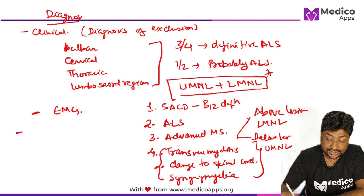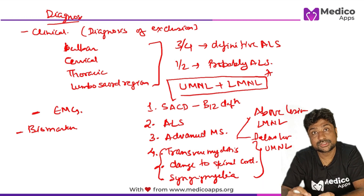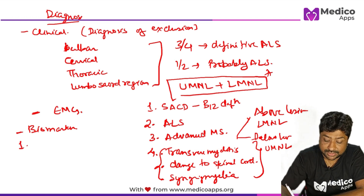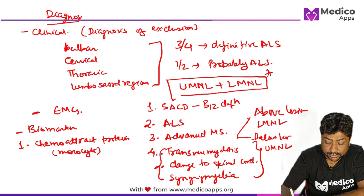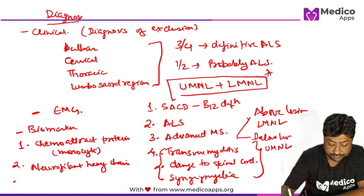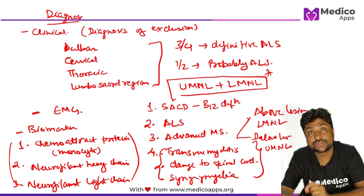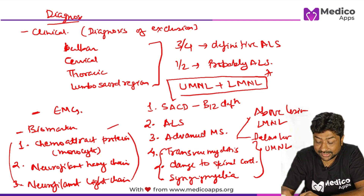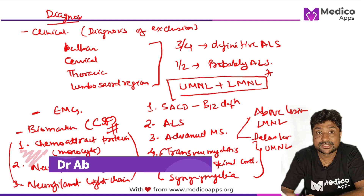There are important biomarkers which help us identify ALS earlier. These are CSF biomarkers: number one is monocyte chemoattractant protein, number two is neurofilament heavy chain, and number three is neurofilament light chain. These three CSF biomarkers help diagnose ALS much earlier.